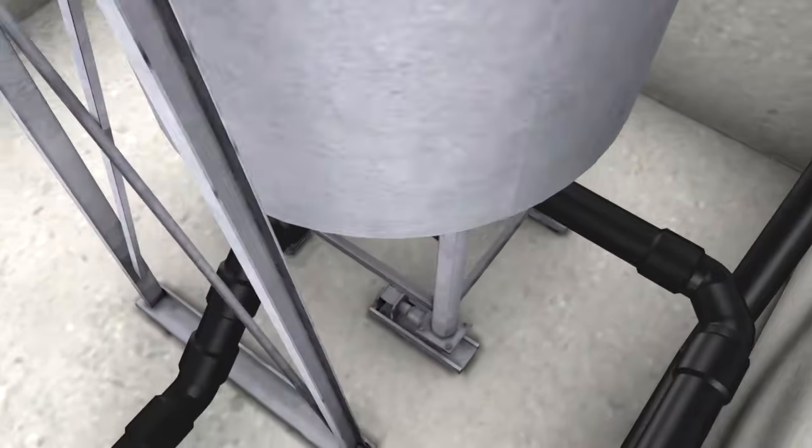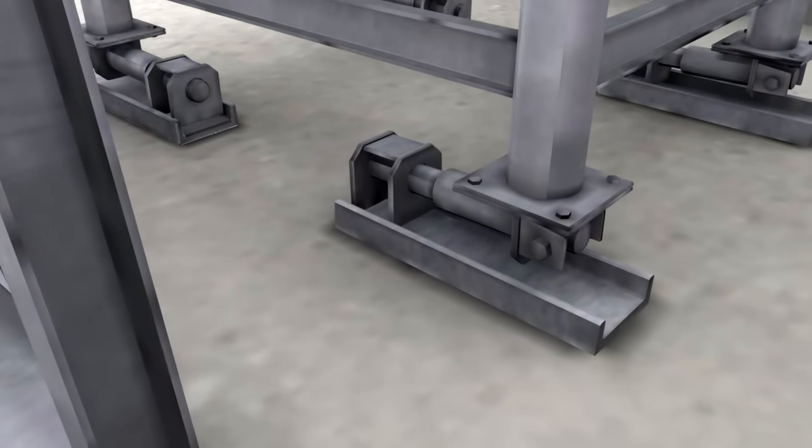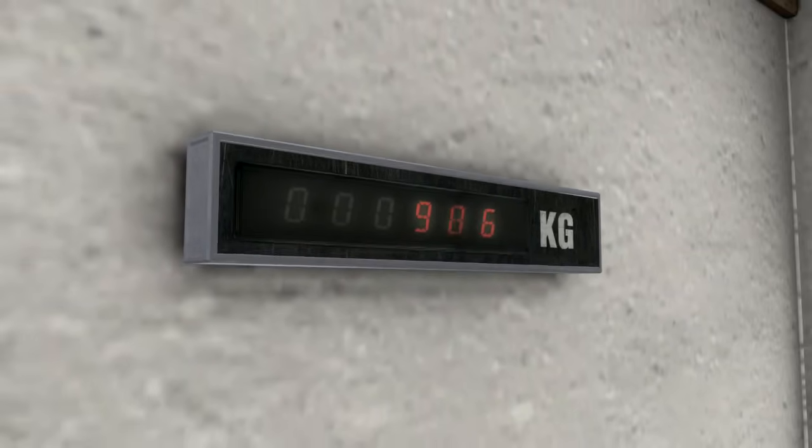A weighing system, which is installed below the mixing container, precisely weighs the amounts. The result is a balanced substrate mixture of a consistent quality.